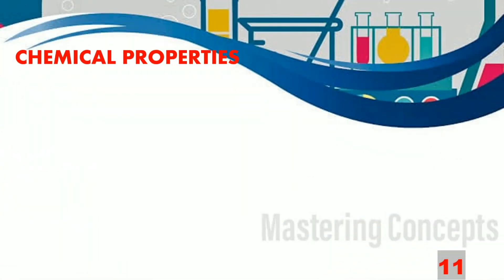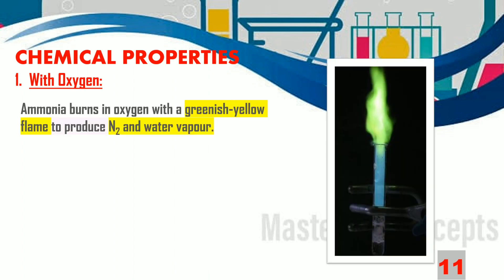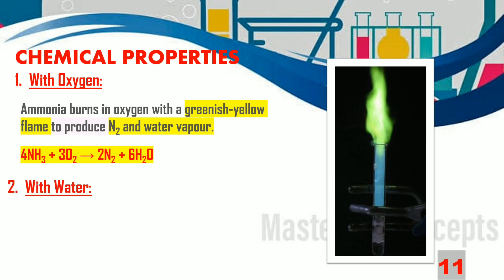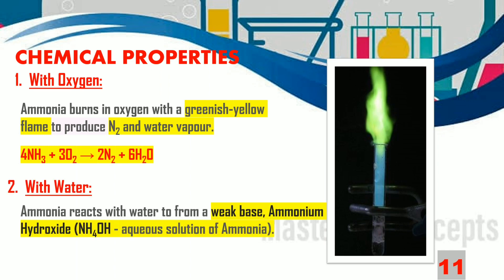Let us now move on to the chemical properties of ammonia gas. With oxygen, ammonia burns with a greenish yellow flame to produce nitrogen and water vapour. The balanced equation is: 4NH3 + 3O2 → 2N2 + 6H2O. With water, ammonia reacts to form a weak base, ammonium hydroxide (NH4OH).